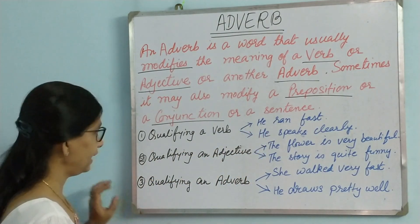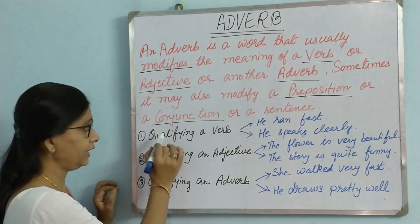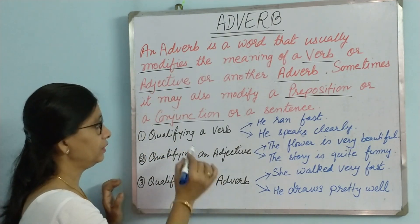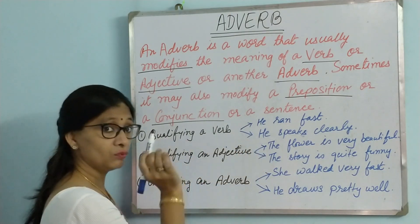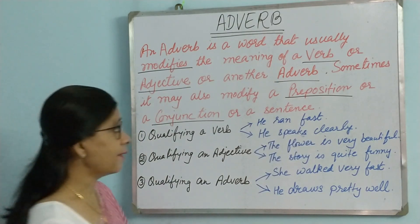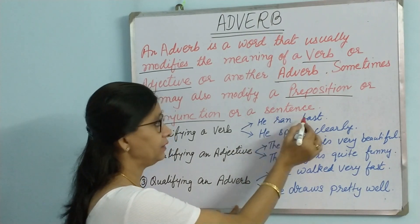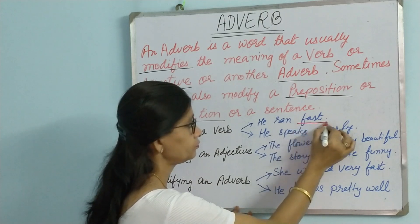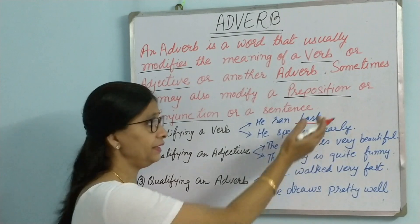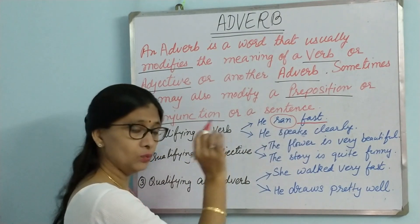Let us see how it does that. First is qualifying a verb — qualifying and modifying mean the same thing: changing or adding more meaning to it. For example, 'He ran fast.' Here, 'ran' is the verb and 'fast' is the adverb. It is adding more meaning to 'ran' — how did he run? He ran fast. So here the adverb is qualifying a verb.